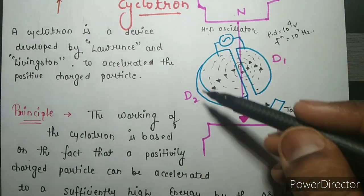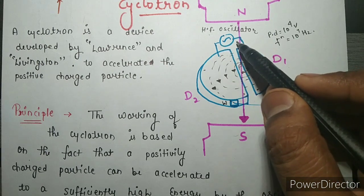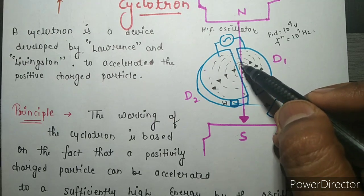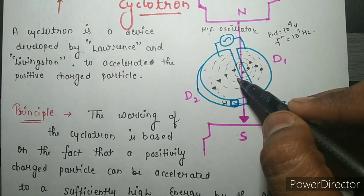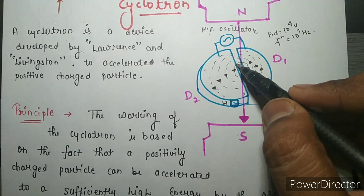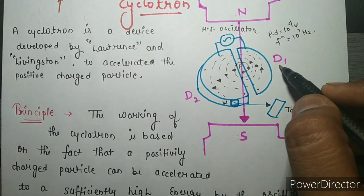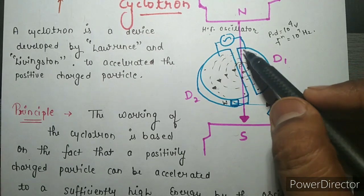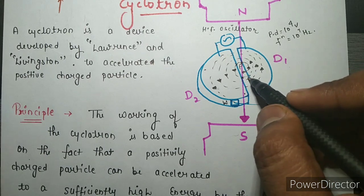Because of the external magnetic field, the particle moves in a circular path. As the particle moves from one dee to the other, the oscillator's potential difference provides an electric field that accelerates the charge particle, giving it a slightly higher velocity. After entering the second dee, the particle moves with constant velocity but in a circle of increasing radius. Then the oscillator makes D1 negative with respect to D2, so the particle is attracted back to D1 with even higher velocity.